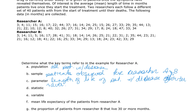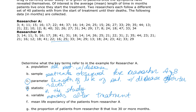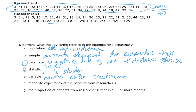What is the statistic? The statistic is similar to the parameter — it is the average length of life with the disease in the study. The only difference is that this refers to the study specifically. What is the variable? The variable is the number of months lived after the patient started treatment. What is the mean? To find the mean I take all the data values, add them up, and divide by 40 — this is for researcher A only — and I got 23.6 months.